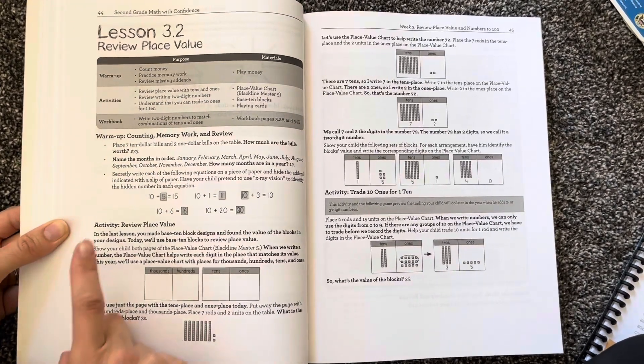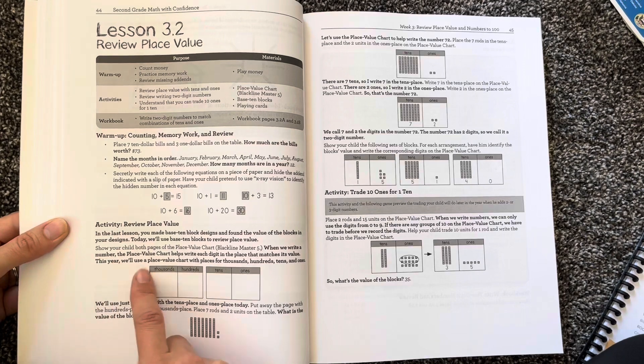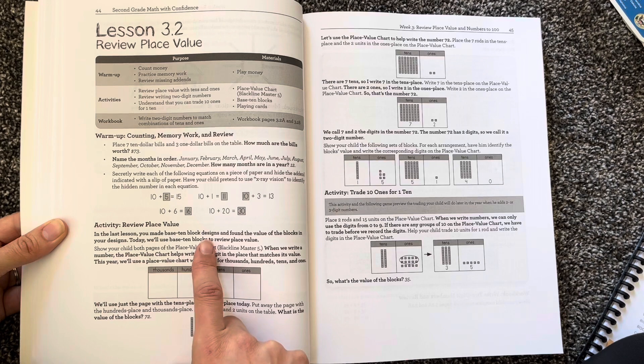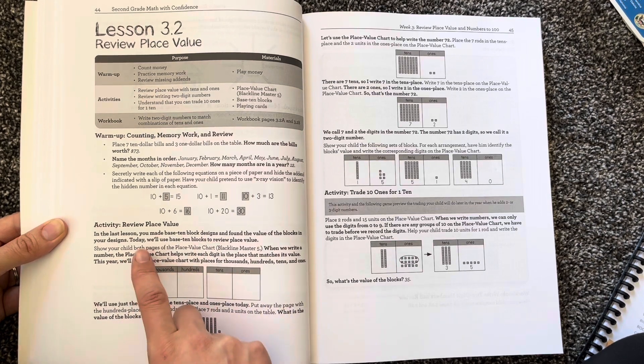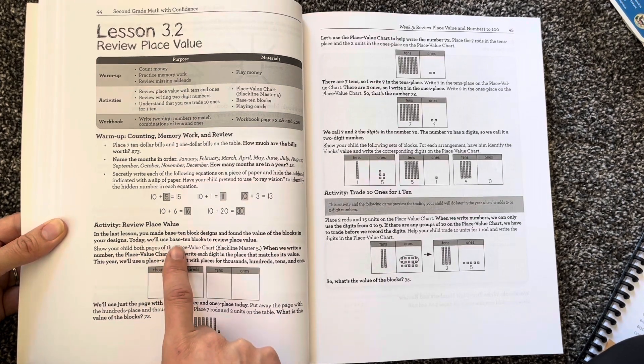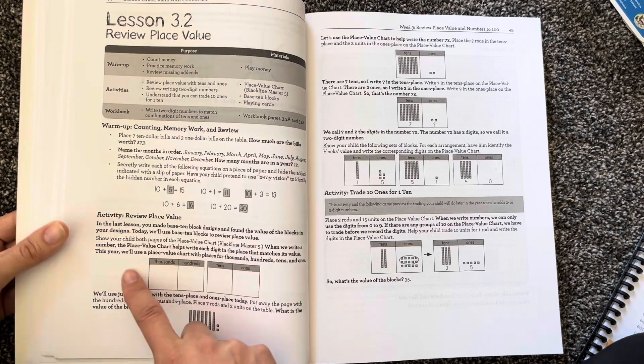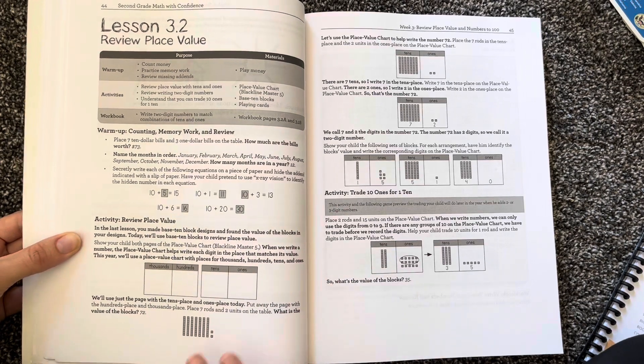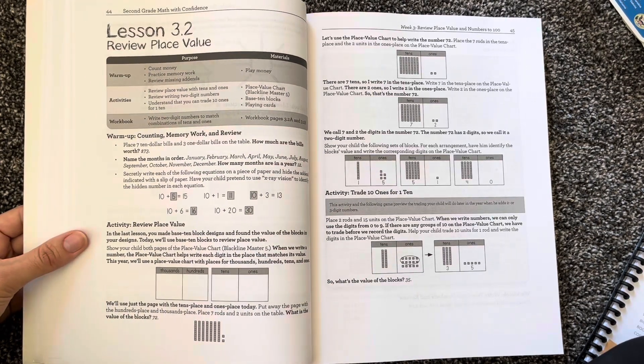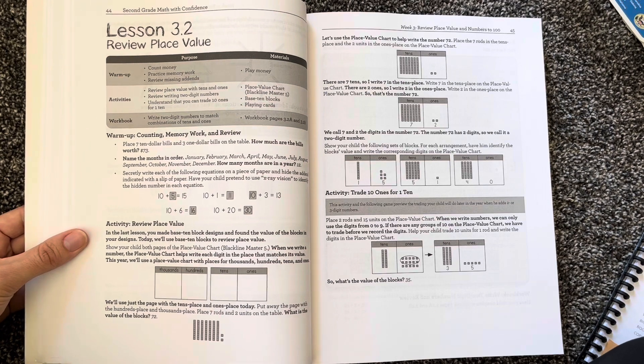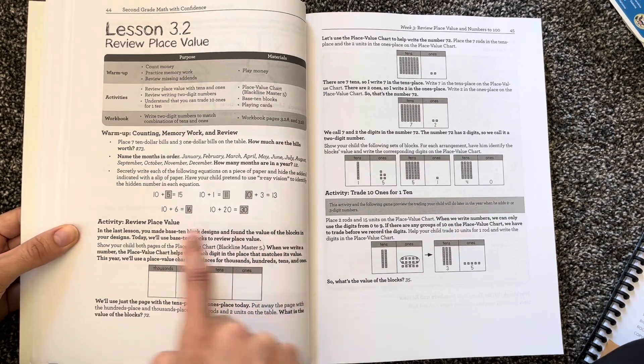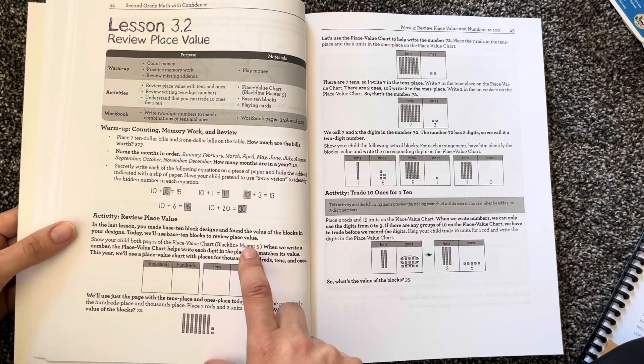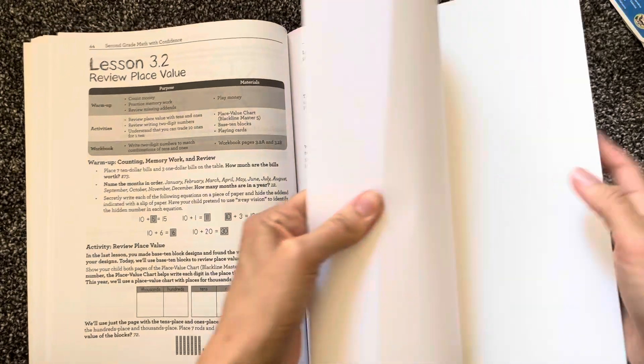Just take a peek, I would recommend that. So you can see the layout is going to have the warm-up. Then you will have an activity. So it looks like here we're reviewing place value. In the last lesson you made base 10 block designs and found the value of the blocks in your designs. Today we will use the 10 base blocks to review place value. If you don't want to say the scripted words in bold, you can say it your own way. A lot of people do that. If you don't know how to swap up the words or you want to say it, then anything that the parent is supposed to say is in bold. And then it tells you what to do in the non-bold.